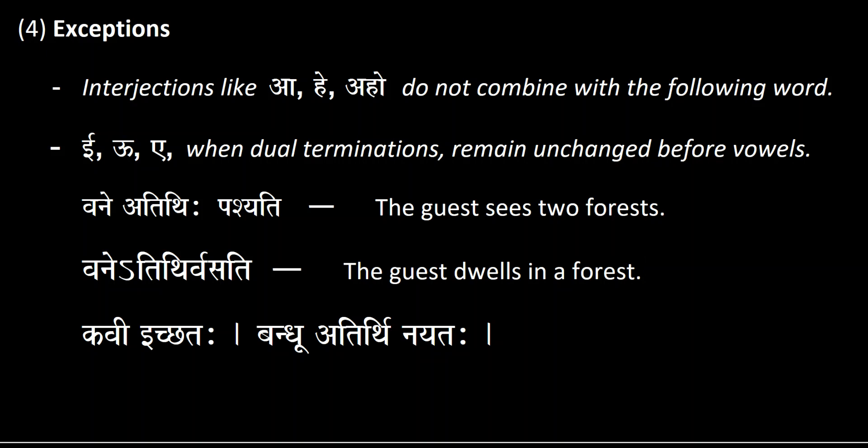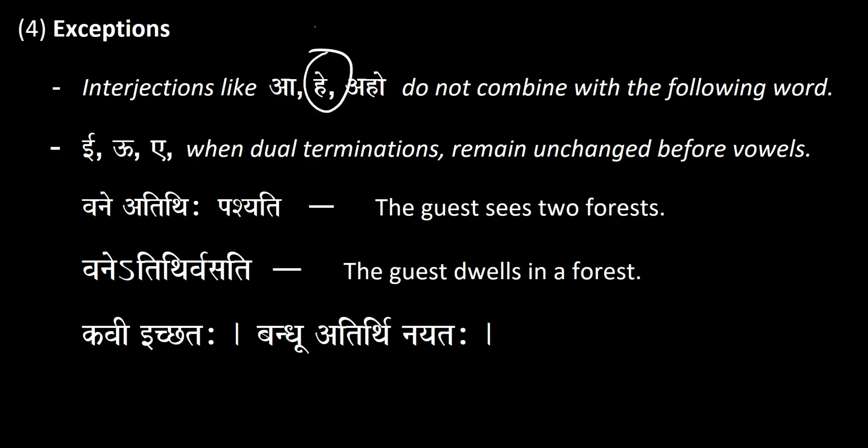Interjections do not combine with any of the following words. For example, 'hey' — 'he' is a word you would use in the vocative case. If you wanted to say 'hey sage' calling out to a sage in vocative case, you would say 'he mune.' Those types of words do not combine with any of the following words.